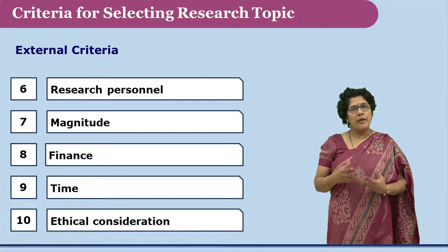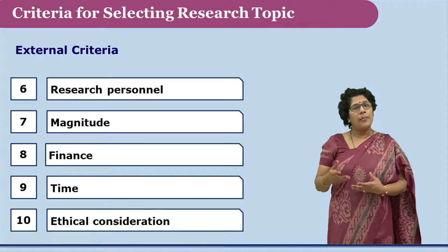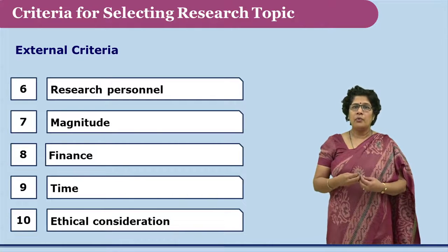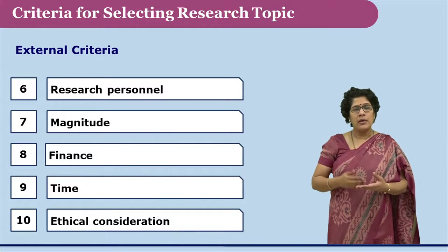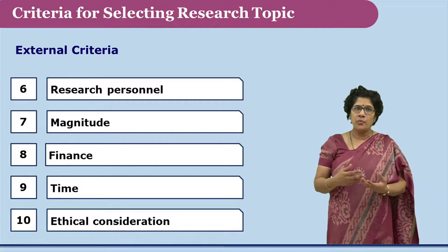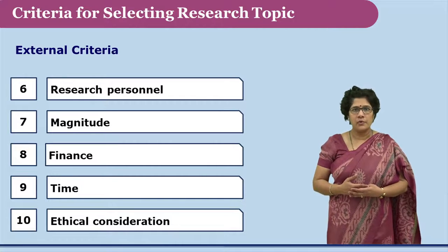Thus we have discussed the many internal and external criteria that decide the topic of research. One needs to consider each factor one by one, answer the questions to oneself, and this kind of reflection would help in reaching the right research problem.